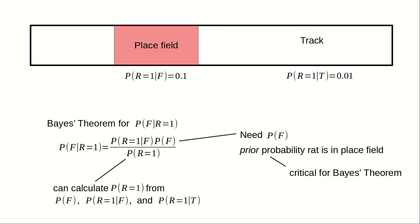In summary, if you have the prior probability of being in the place field along with the spiking probabilities conditioned on the rat's location, you can use Bayes' theorem to make inferences about the rat's location from observations of the neuron's activity.